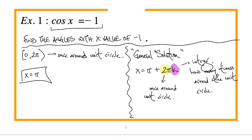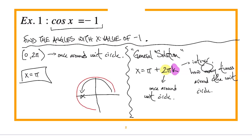A student asks: is there any reason you wouldn't just use infinity? The answer is: because I want every specific time I hit that angle, which is every time around the unit circle. Using infinity would mean going around an infinite number of times without stopping. With k, you stop each time — go halfway around for π, go all the way around and halfway again to return to the same angle.